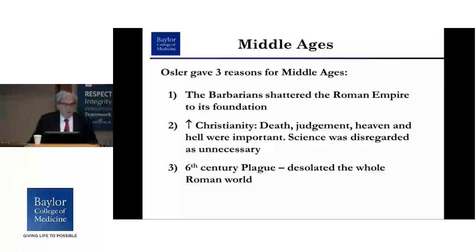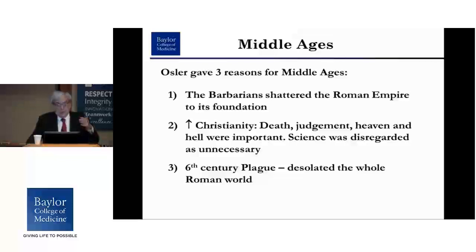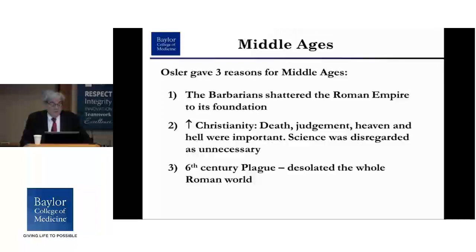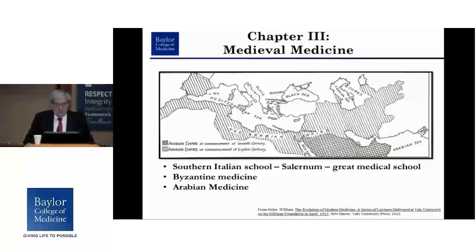Now we come to the Middle Ages. Osler gives three reasons for the down period in development: first, the barbarians shattered the Roman Empire to its foundations; second, the rise of Christianity focused on death, judgment, heaven, and hell, making science seem unnecessary; and third, in the sixth century the plague desolated the whole Roman world. All these things coming together led to what we now think of as the Middle Ages.